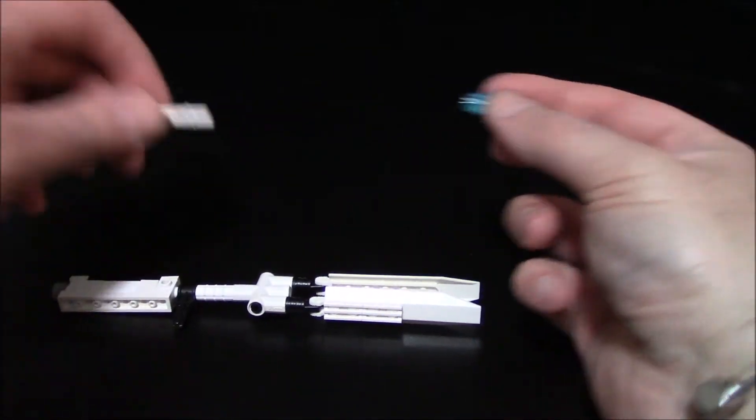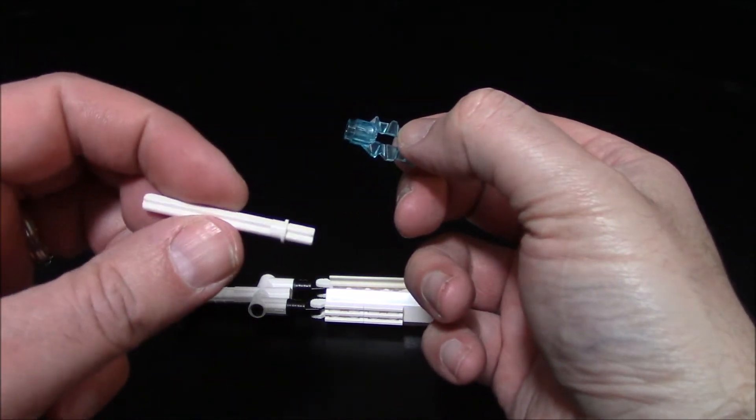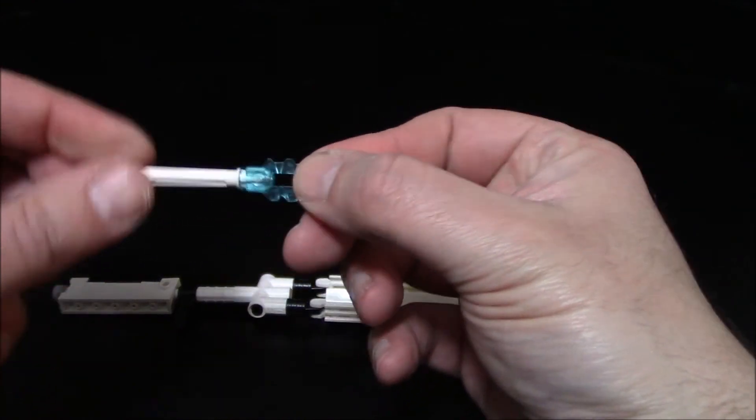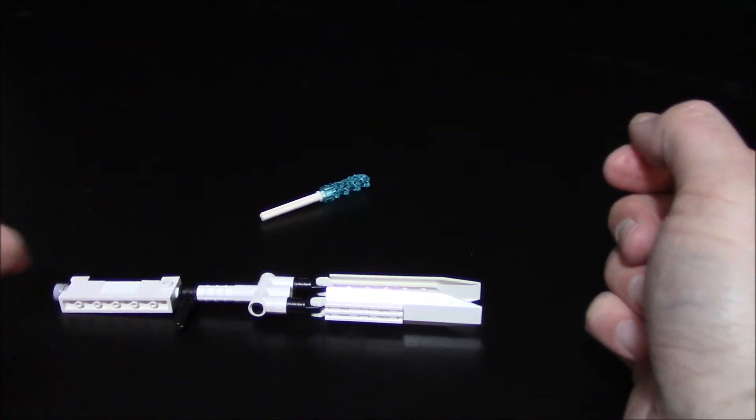This section is the effect section. You get this lightning piece and this white axle - about five long with a stopper here. Put on your electricity piece; that's just for effect.